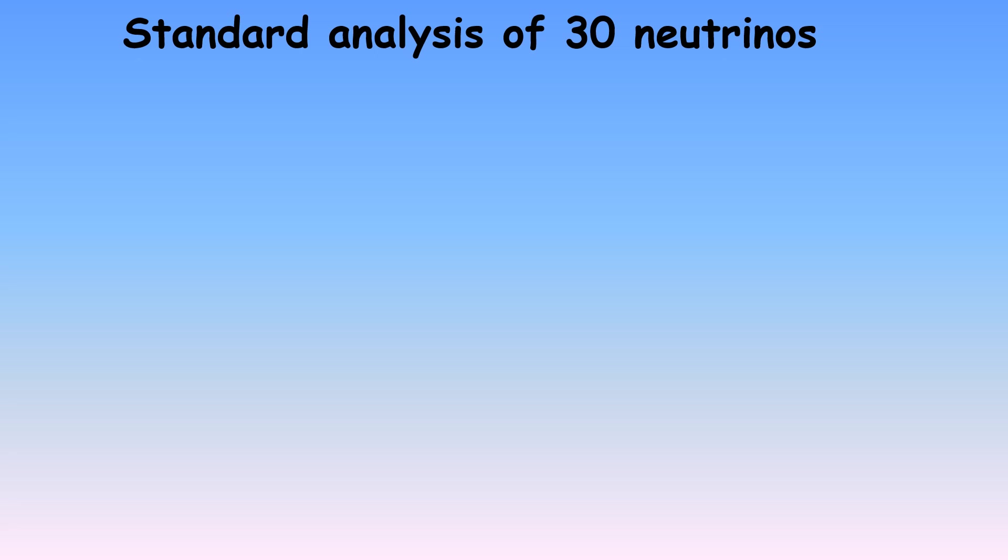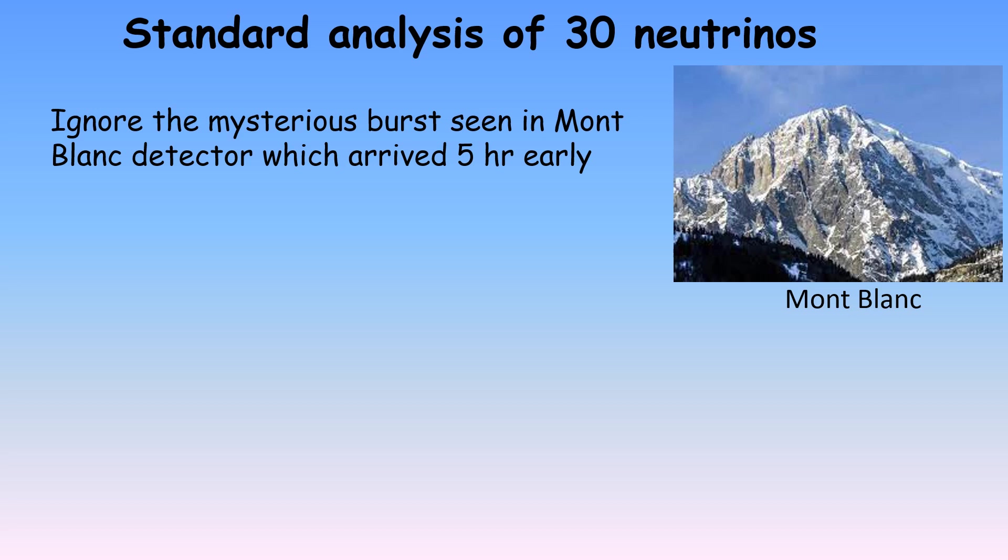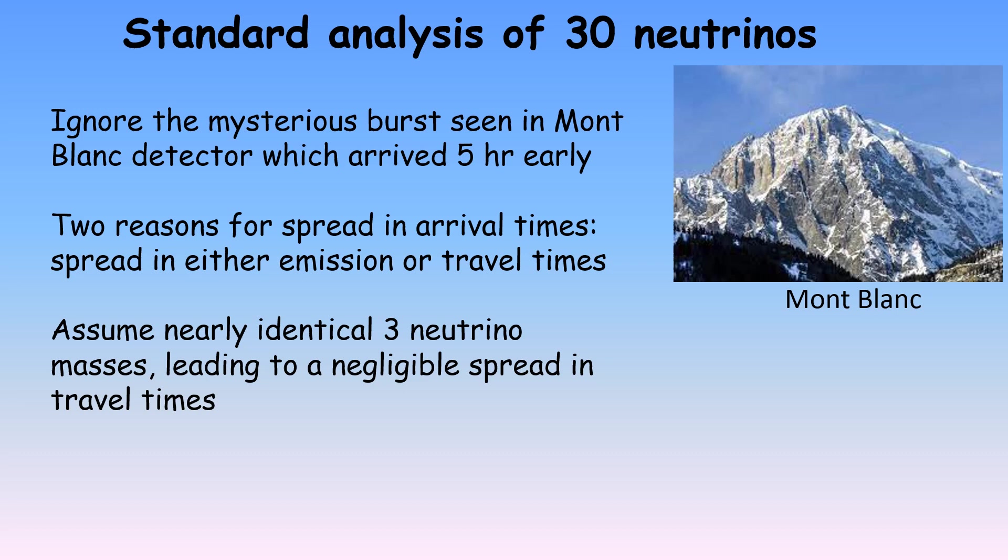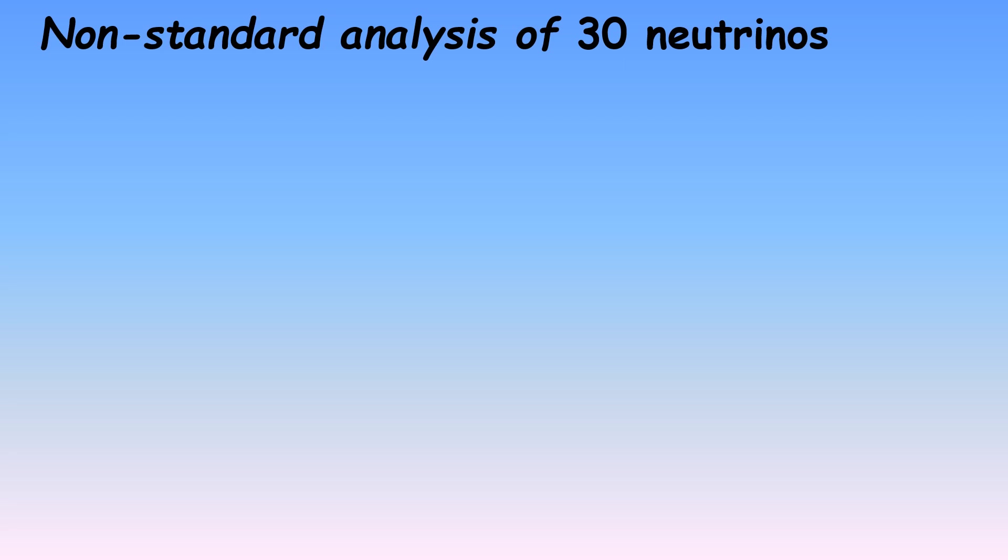Thirty neutrinos associated with the brief burst were observed in four neutrino detectors on February 23, 1987. In the standard analysis of this data, the burst in one detector under Montblanc is usually ignored. That burst is thought to be a random fluctuation, as it weirdly arrived five hours earlier than the other three, which all arrived together in roughly a 15 second time interval. There are two reasons why that 15 second spread in arrival times occurred. The spread could either be due to a spread in the times neutrinos were emitted from the supernova, or a spread in their travel times to reach Earth due to their different masses and energies. In the standard analysis, it is assumed that the three types of neutrinos all have nearly identical small masses, which leads to a negligible spread in their travel times. The standard analysis has yielded only an upper limit to the neutrino mass.